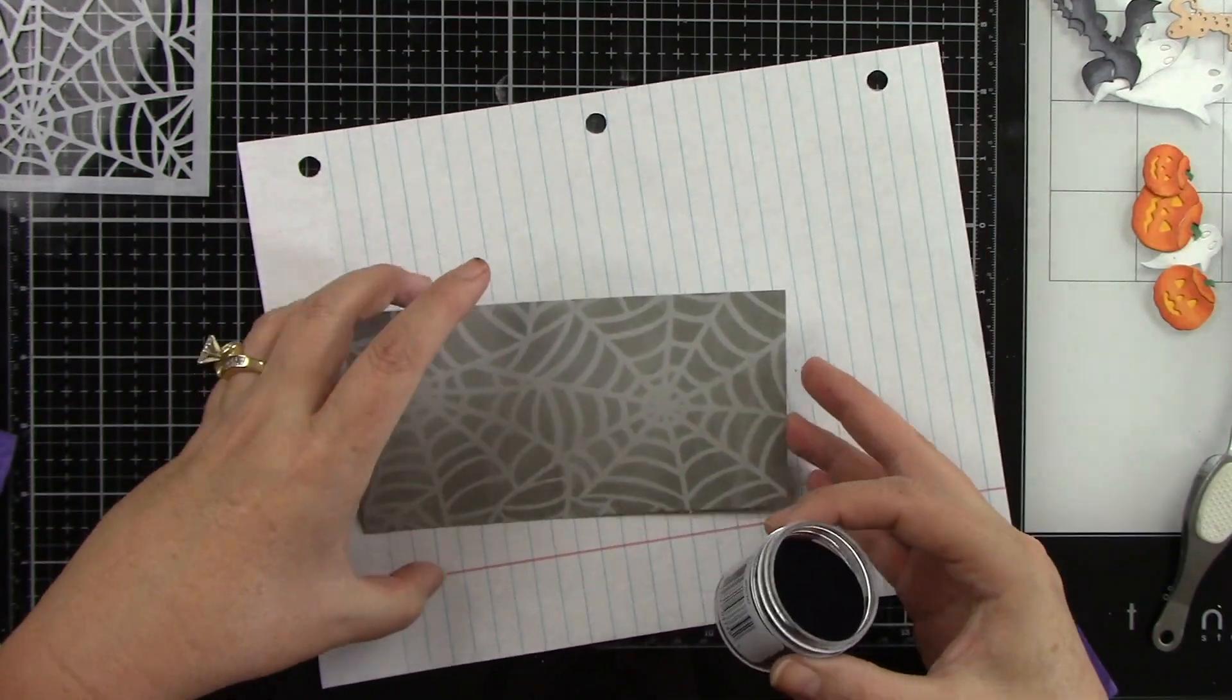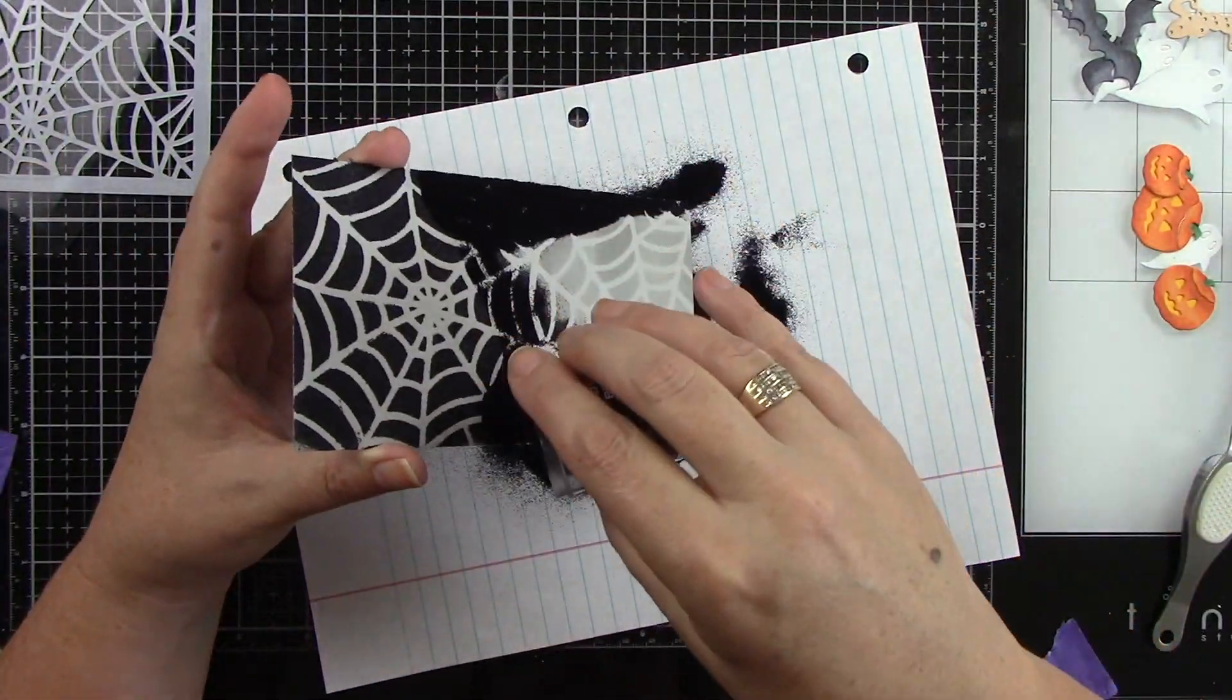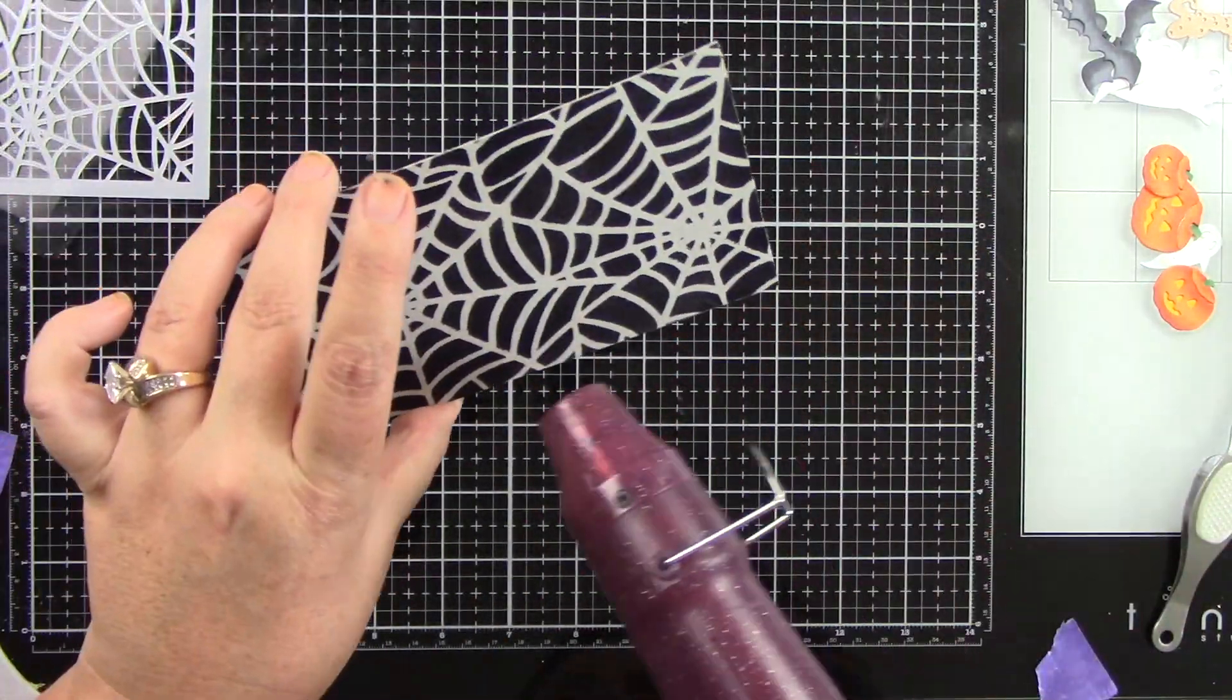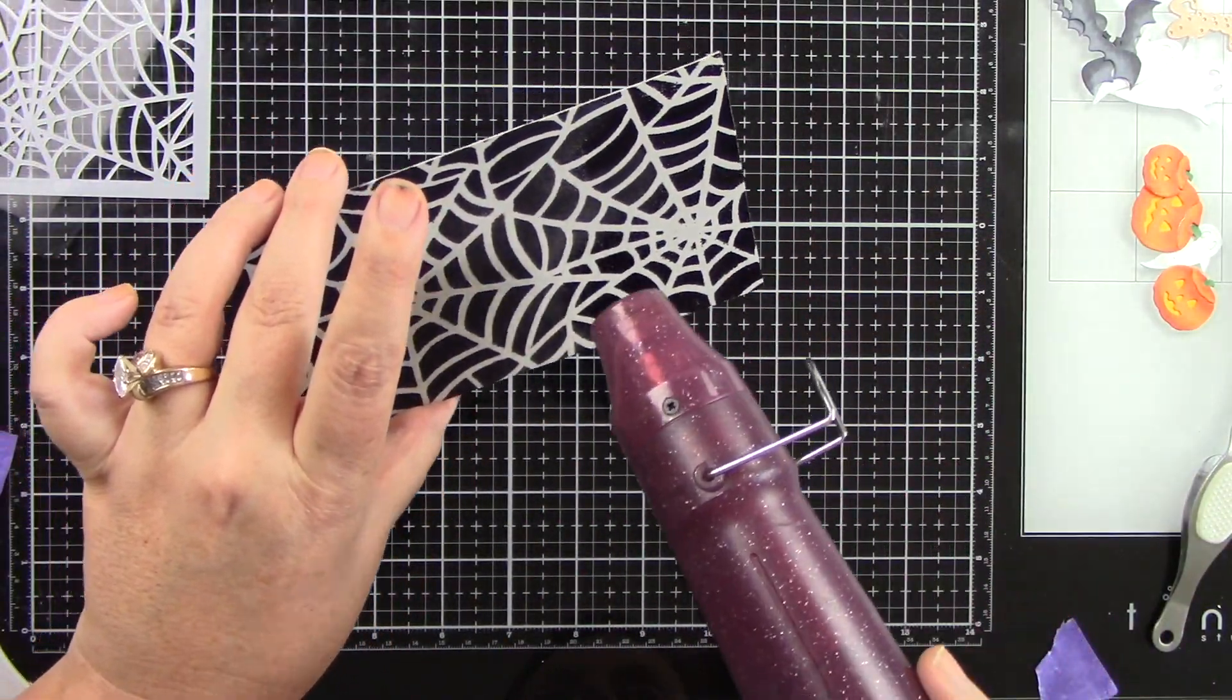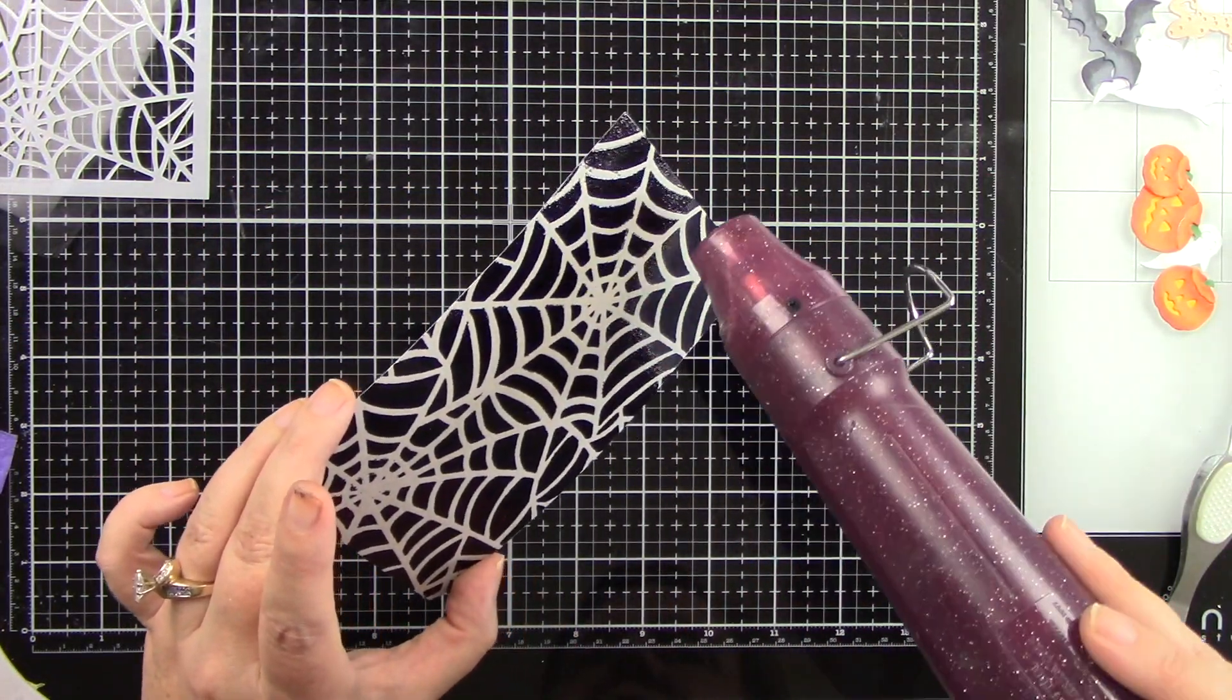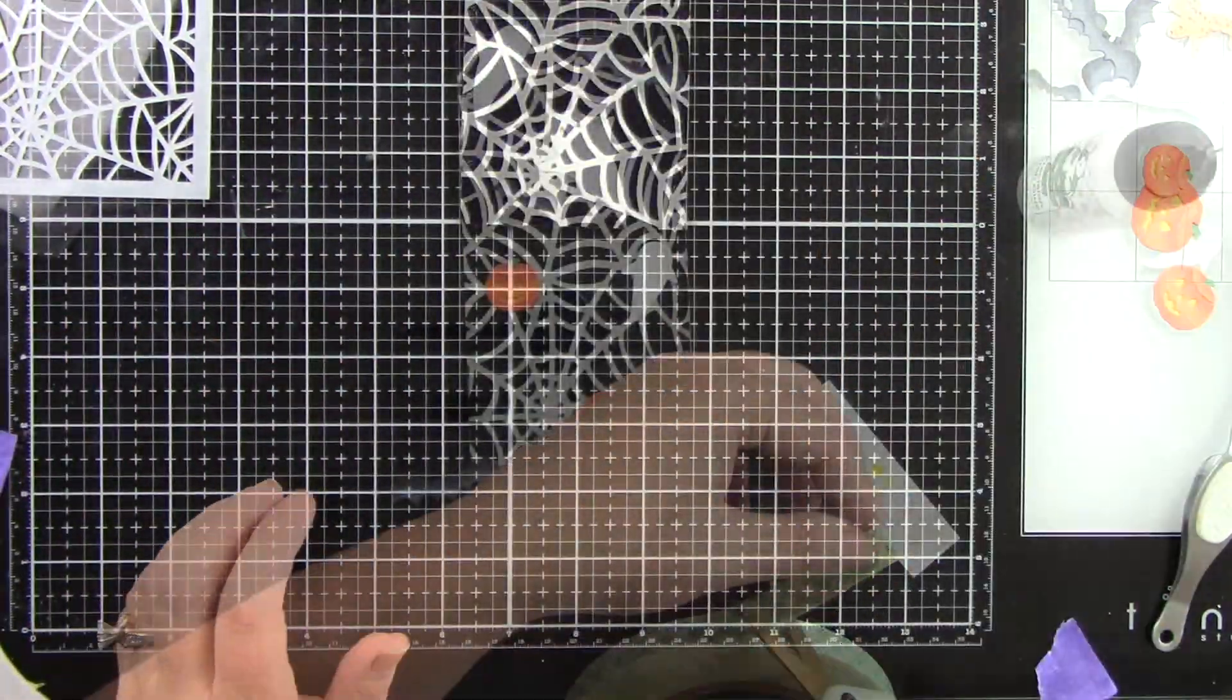This background is going to be so fantastic. The spiderweb itself is going to be light gray, and then the background is going to be this shiny black. Now I do like to heat up my heat tool for a really long time, especially on a big thing like this, because I don't want it to warp my paper.